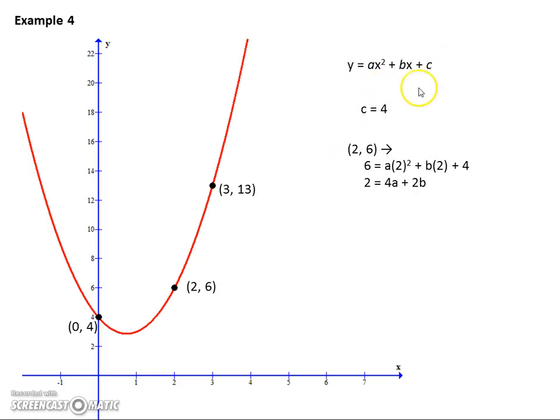We know that c equals four. So I put that in. But we use the other two points to generate two equations. We've got 2 equals 4a plus 2b and 9 equals 9a plus 3b.